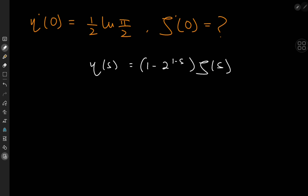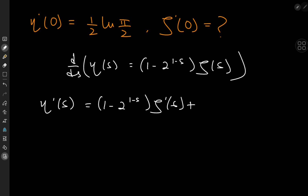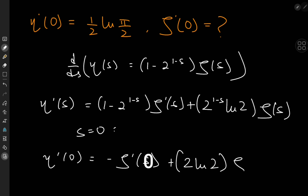We know the derivative of the eta function at 0, so let's differentiate and solve for ζ'(0). Applying the product rule gives η'(s) = (1 − 2^(1−s)) · ζ'(s) plus 2^(1−s) · log 2 · ζ(s). At s = 0, this becomes η'(0) = (1 − 2) · ζ'(0) + 2 · log 2 · ζ(0), i.e., η'(0) = −ζ'(0) + 2 log 2 · ζ(0).